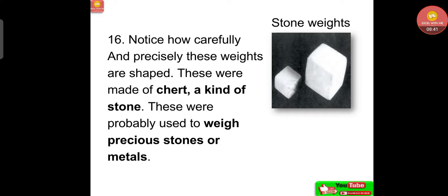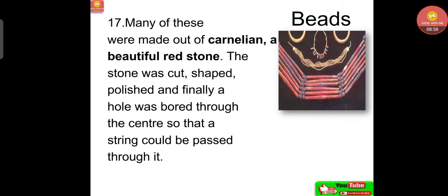Stone weights were also used at that time. These were made of chert, a kind of stone, and were carefully and precisely shaped. They were probably used to weigh precious stones or metals. Many beads were made out of carnelian, a beautiful red stone. The stone was cut, shaped, polished, and finally a hole was bored through the center so that a string could be passed through it.